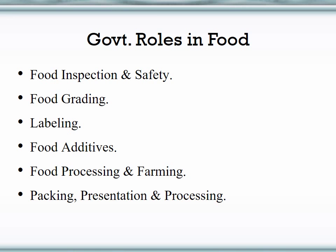The government plays many different roles in our food supply at local, state, and national levels. For this chapter, we're going to look specifically at the role of government at the national level — the two major players involved in the food production system: the United States Department of Agriculture and the Food and Drug Administration.